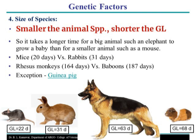This is all about the genetic factors that determine gestation length in different animal species. The next factor — environmental factors — will be dealt with in detail in the next lecture. Thank you very much.